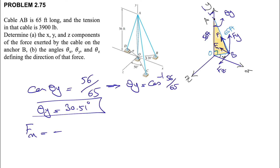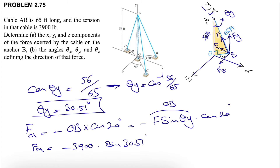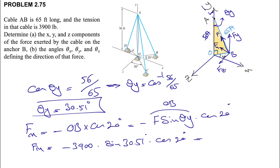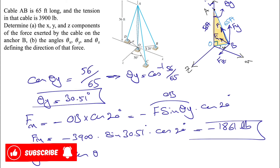Now to find Fx — looking at the right triangle, Fx is in the opposite direction of the x-axis, so it will have a negative sign. We get Fx = OB × cos(20°). To find OB, we use F × sin(θy), so Fx = F × sin(θy) × cos(20°). With F = 3900 pounds and θy = 30.51°, we find Fx = -1861 pounds.